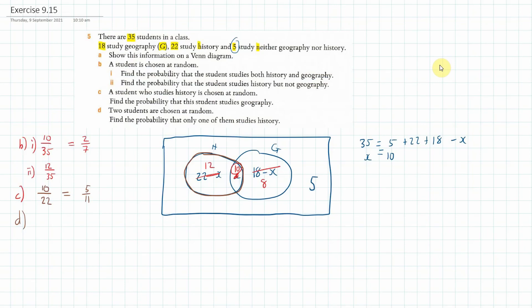So let's say that we pick the first one and they study History. So out of the 35, the chance that they study History is 22. Then now we've only got 34 students to pick from and we don't want somebody who studies History.